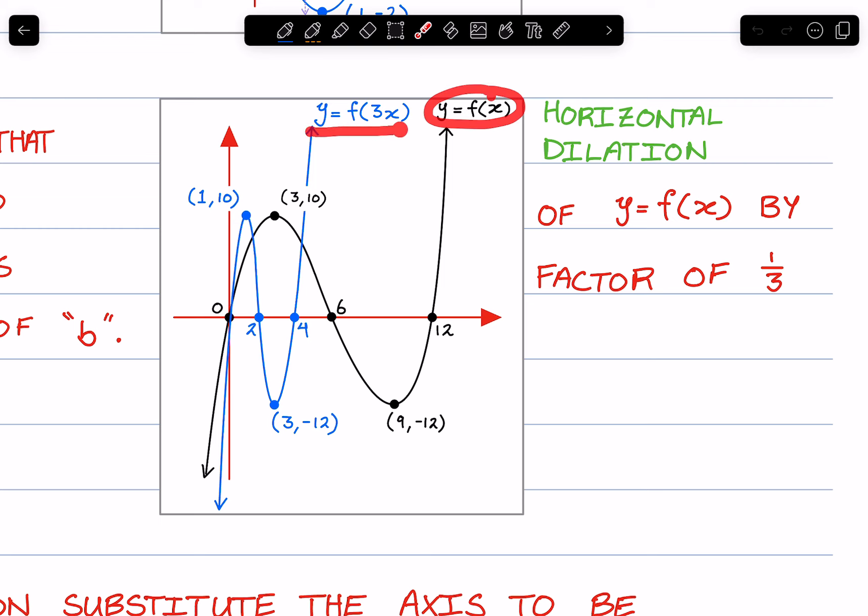And in blue is the dilated function, or the transformed function. This time, it is a factor of one-third. When we dilate it by a third, the distance, so take a look. This distance here, 3, its distance to the y-axis is 3.